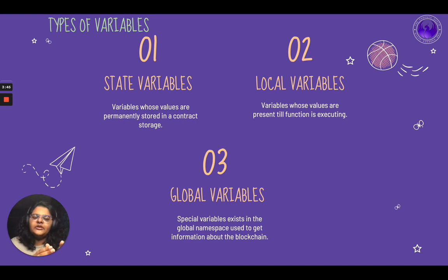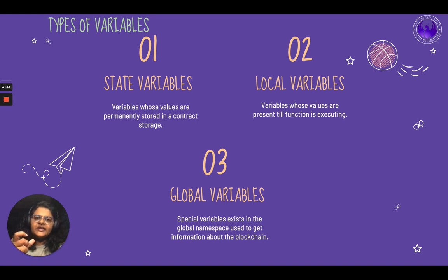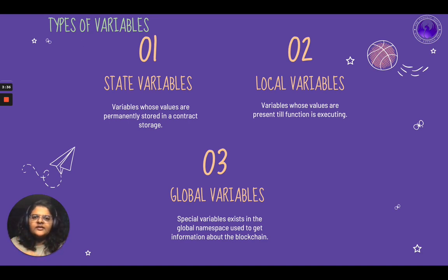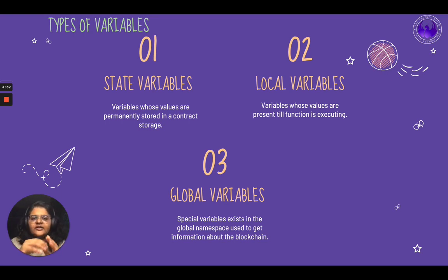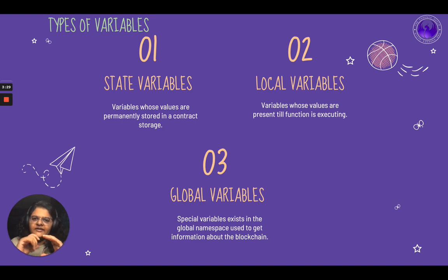The second type of variables are local variables. These are temporary variables that we create when we want to store some information temporarily within the contract. The scope of these variables is just within the function, until the particular function or body of code is executing.